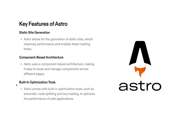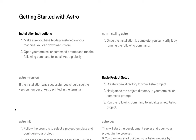Built-in optimization tools: Astro comes with built-in optimization tools such as automatic code splitting and lazy loading to optimize the performance of web applications. That's pretty impressive.